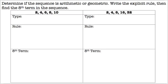For this table, determine if the sequence is arithmetic or geometric, write the explicit rule, then find the eighth term. On the left hand side we have 2, 4, 6, 8, 10. We can first check to see if they're adding a certain amount. The difference from 2 to 4 is 2, 4 to 6 is 2, 6 to 8 is 2, and 8 to 10 is 2, so it is arithmetic.